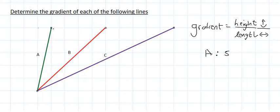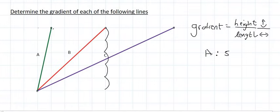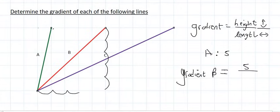Let's look at B. B's height is 5 as well. And the length is 5. And so 5 divided by 5 is 1.